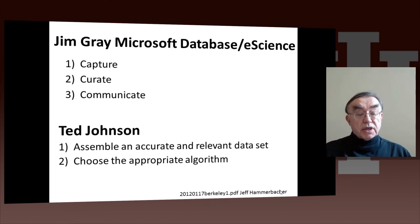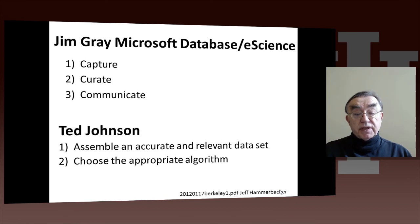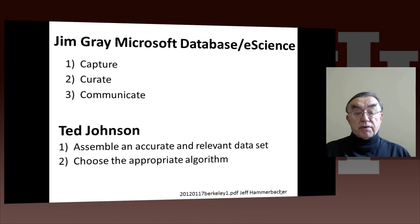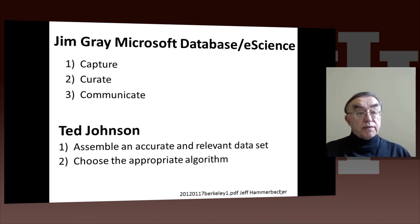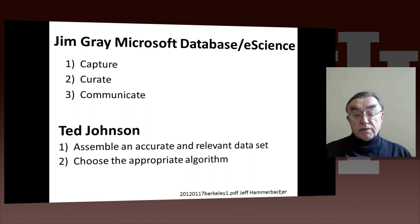Ted Johnson's two steps were: assemble an accurate and relevant data set — get the data which is relevant — and then find an algorithm. Clearly there are many different algorithms and several different approaches, and different data, even in the same field, might require different algorithms.